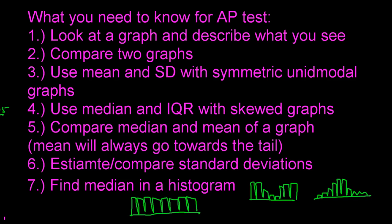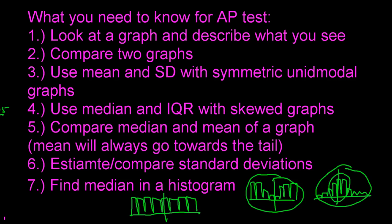All of these histograms have the same mean right in the middle. The bell-shaped one has the greatest standard deviation because most data is either far to the left or far to the right — most data is far from the mean. The tall narrow one has the smallest standard deviation since most data is very close to the mean. The uniform graph lands in the middle — it has data both near and far from the mean.